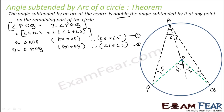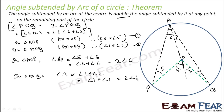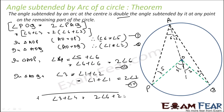In triangle AOP, angle 4 is the exterior angle and equals the sum of opposite interior angles, that is angle 5 plus angle 6. Since angle 5 equals angle 6, this gives twice angle 6. Similarly, in triangle AOQ, angle 3 is the exterior angle equal to angle 1 plus angle 2. Since angle 2 equals angle 1, this gives twice angle 1. Adding these two equations gives angle 3 plus angle 4 equals twice angle 6 plus twice angle 1, which is what we had to prove.